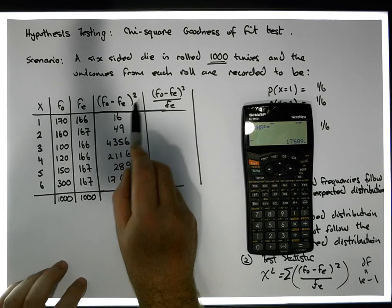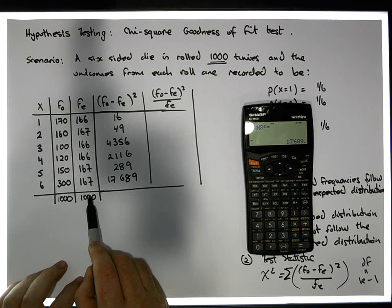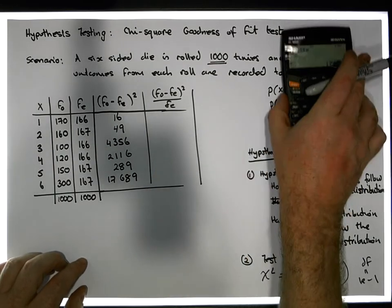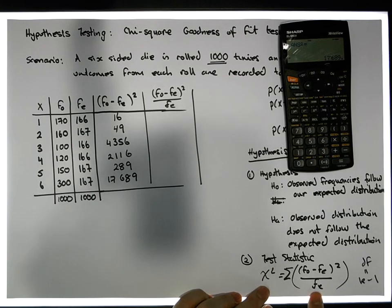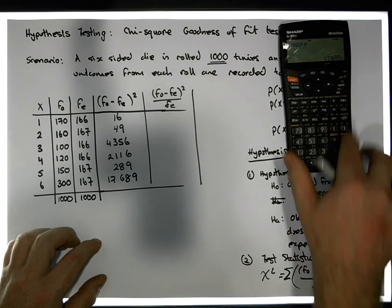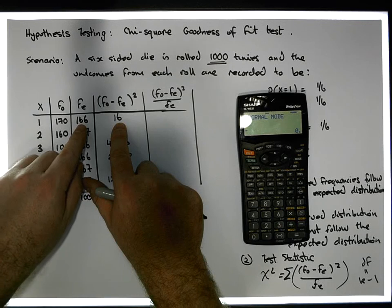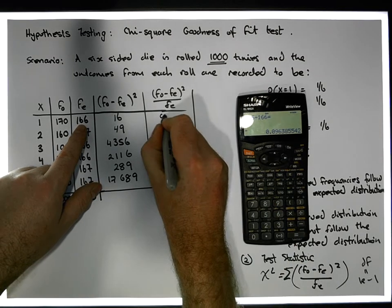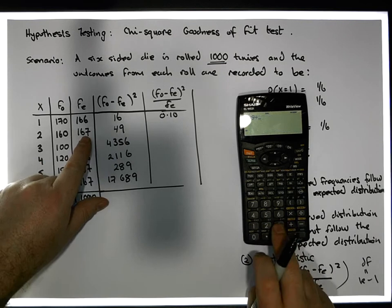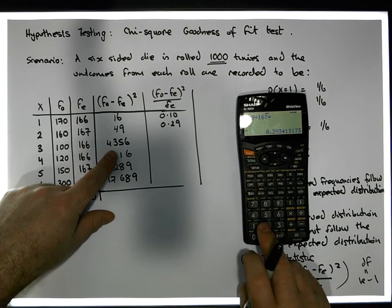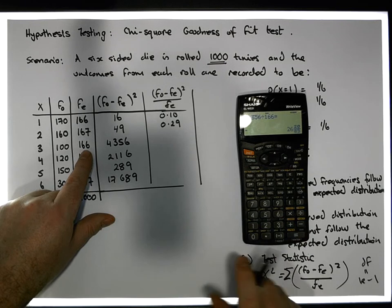So these are the squared distances that the observations are away from the expected — the squared difference between the observed distribution and our expected distribution. But what we need for the chi-squared test statistic is those observed squared distances relative to the expected frequencies. So we divide them by the expected frequencies: 16 divided by 166 gives us about 0.10; 49 divided by 167 gives us about 0.29; and 4,356 divided by 166 gives us approximately 26.24.